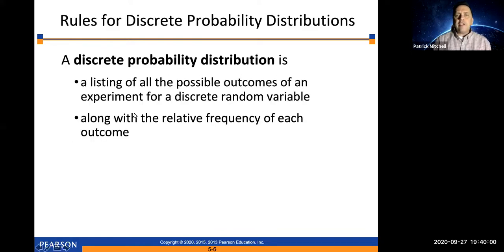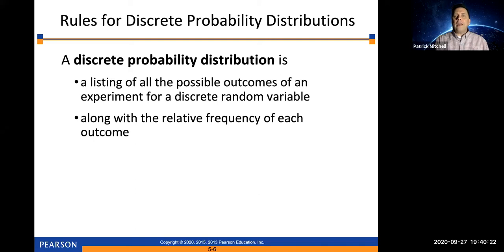For this chapter, we will only talk about discrete probability distributions. When we talk about a discrete probability distribution, we're talking about a listing of all the possible outcomes of an experiment for a discrete random variable, along with the relative frequency of each outcome. When we talk about a random variable, we're talking about a set of numerical values — the possible values you can get in your experiment — along with the probability of each of those outcomes.